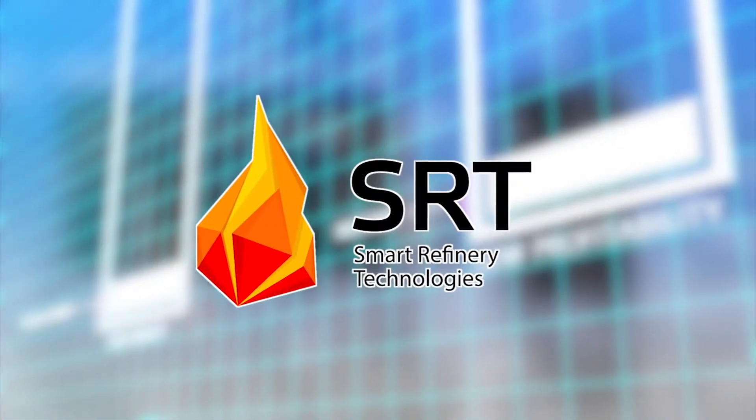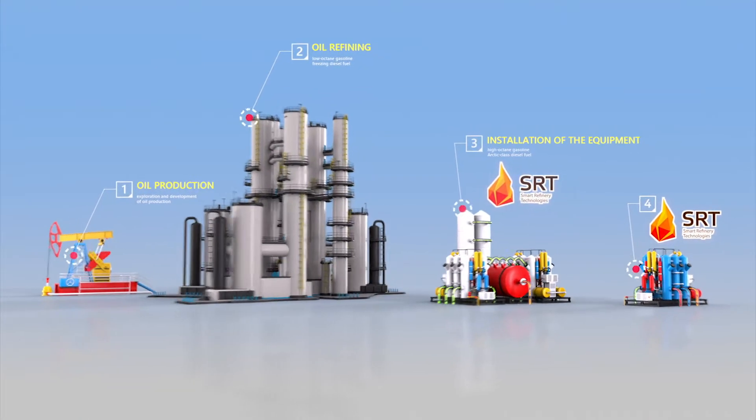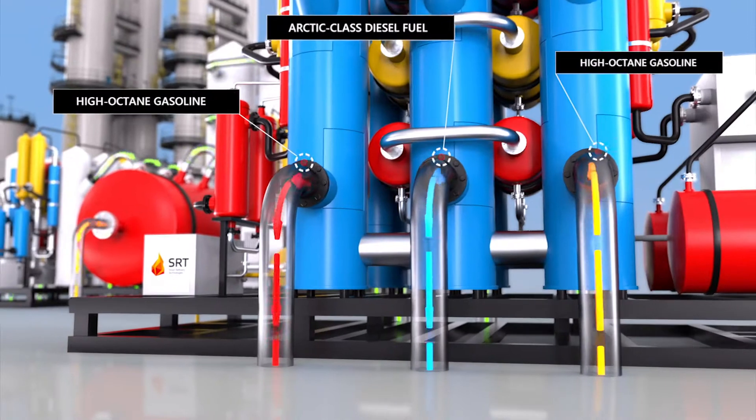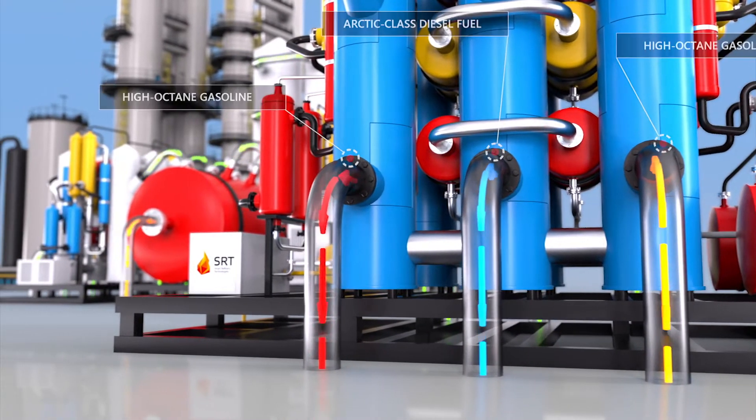SRT Group solves this problem by introducing modular plants into the process to produce high-octane gasoline and arctic diesel fuel corresponding to state-of-the-art standards.